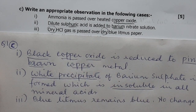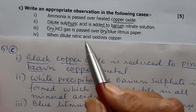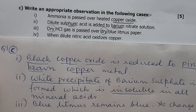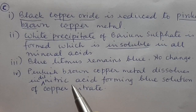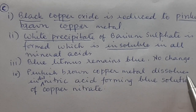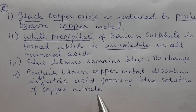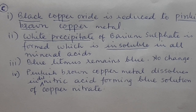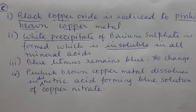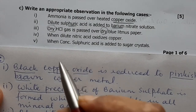When dilute nitric acid oxidizes copper: write that pinkish-brown copper metal dissolves in dilute nitric acid forming a blue solution of copper nitrate. Remember, the gas given out is NO (nitric oxide), which is colourless, so there is no other observation.